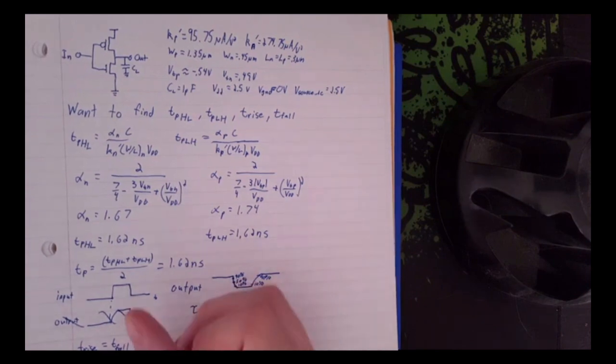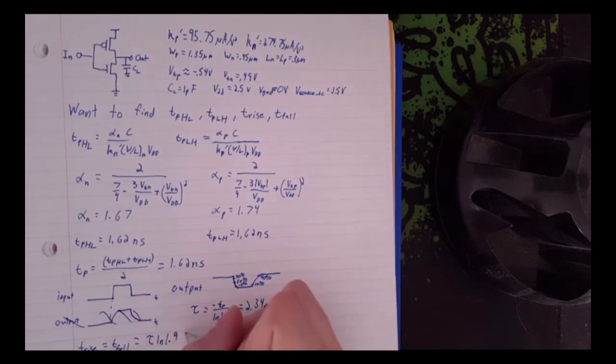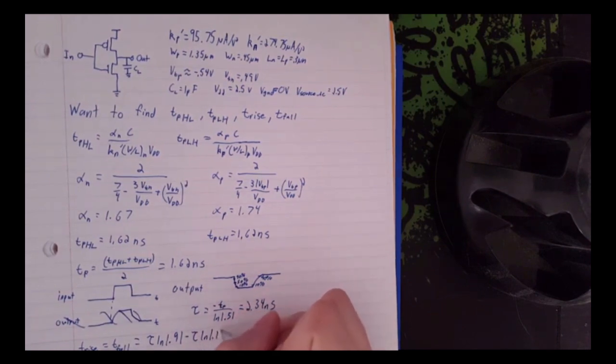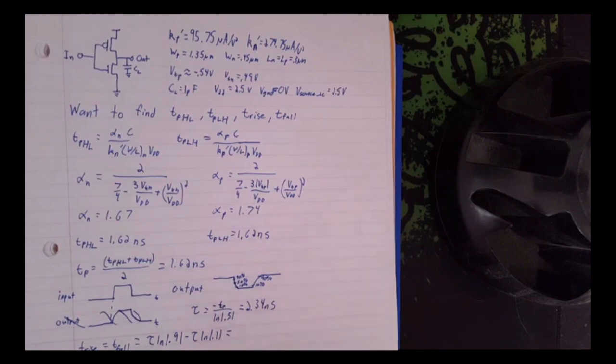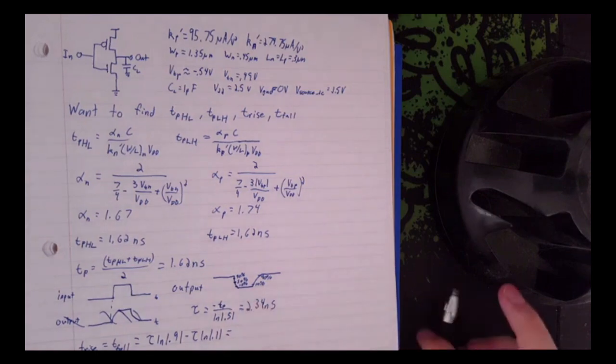So to calculate that, we'll just do tau times ln of 0.9, which is 90%, minus the tau times ln of 0.1, which is 10%. And so that's just going from our 90% marker to our 10% marker. And it's just the difference between the times it takes.